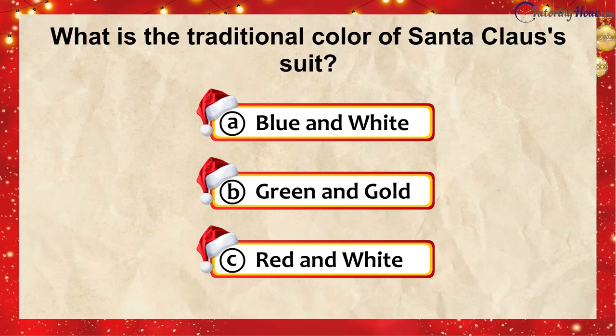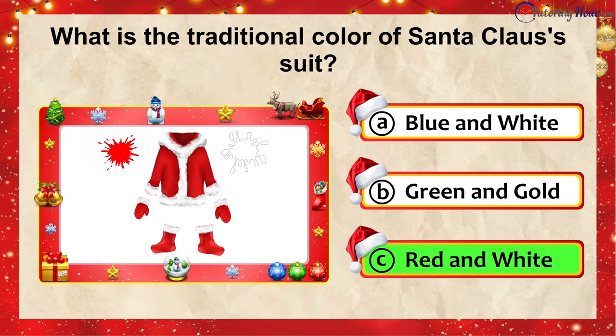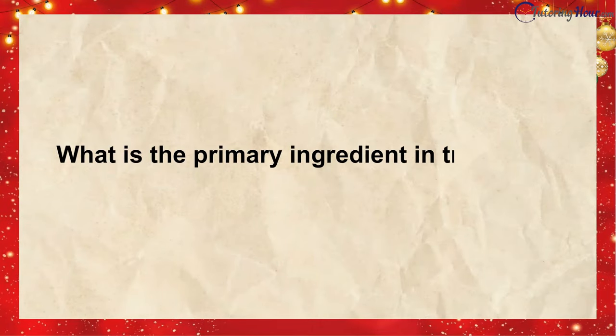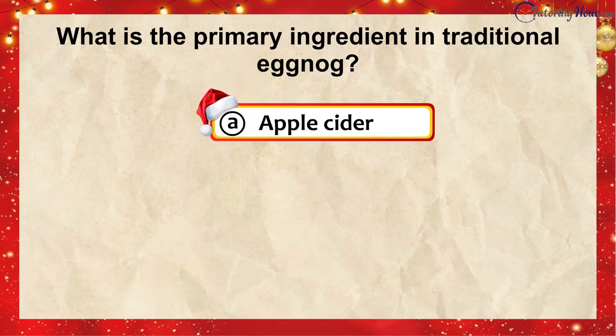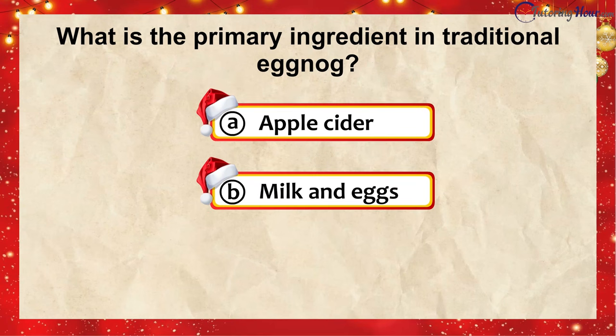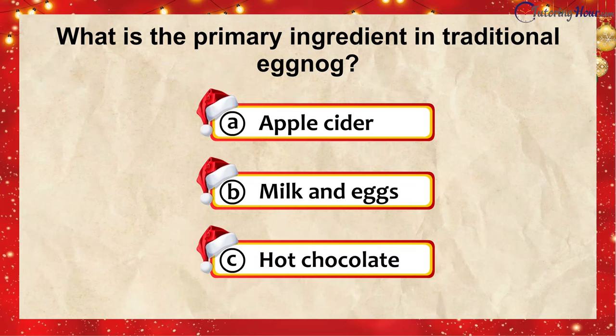And the correct answer is... Red and white! What is the primary ingredient in traditional eggnog? Is it... A. Apple cider, B. Milk and eggs, or C. Hot chocolate?